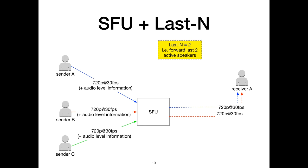Last N is different from simulcast. The bridge does not decode audio, so it cannot perform dominant speaker identification based on that. However, Chrome supports RFC 6464, which is an RTP header extension with audio level information, and our bridge can perform dominant speaker identification based on that. This allows it to keep an ordered list of active speakers, and with Last N configured — for example N equals 2 — the bridge sends the last two active speakers towards a specific endpoint, conserving bandwidth.